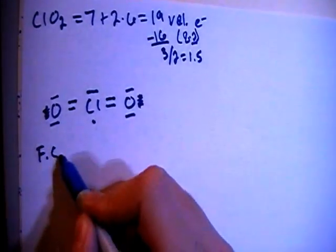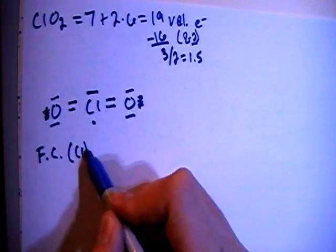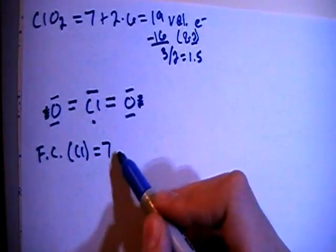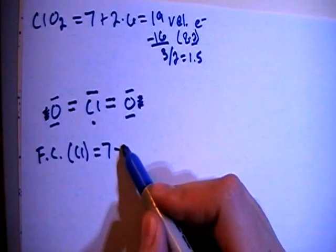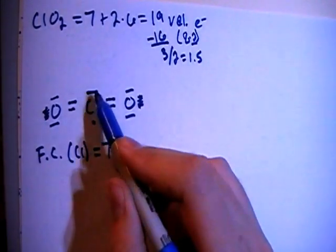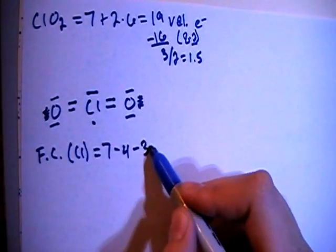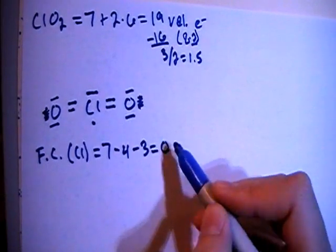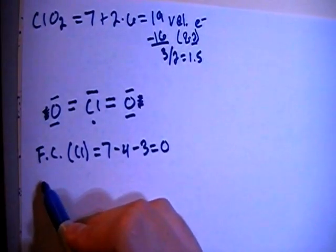So the formal charges on chlorine first, it's going to be 7 valence brought in, minus 1, 2, 3, 4 bonds, minus 1, 2, 3 non-bonding. It's going to give you a formal charge of 0, which is very good, because before it was not even close.